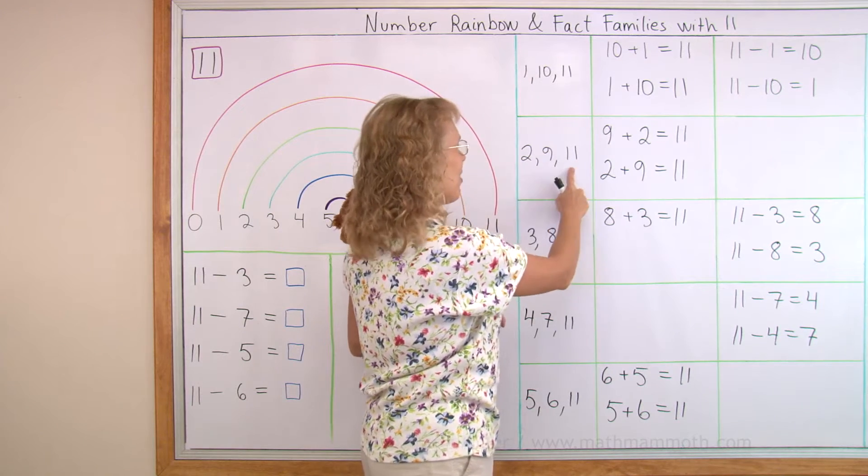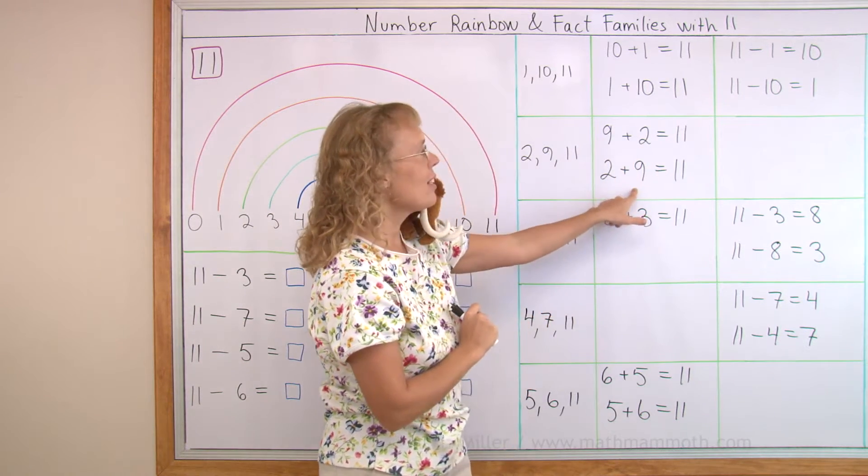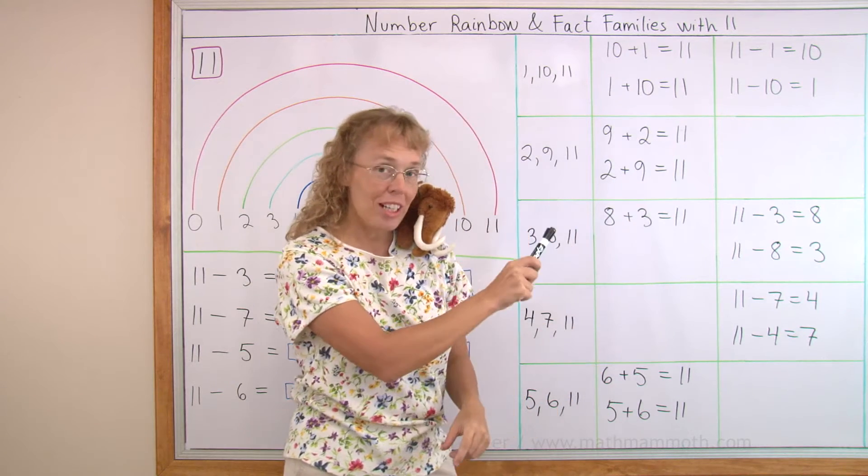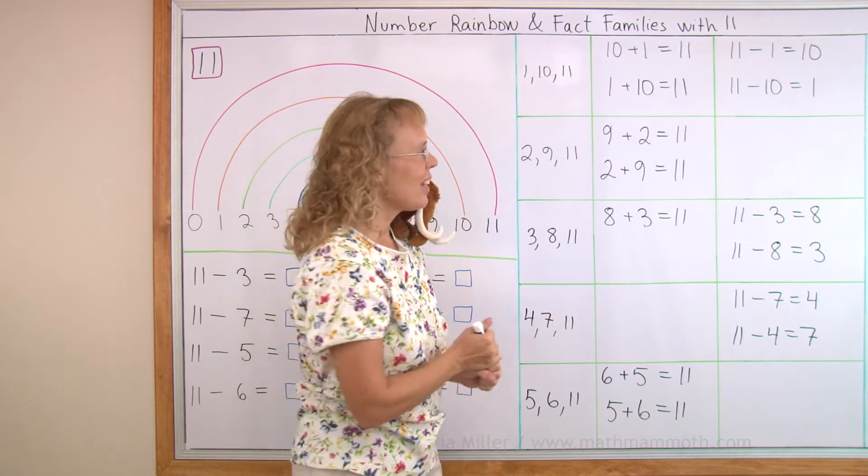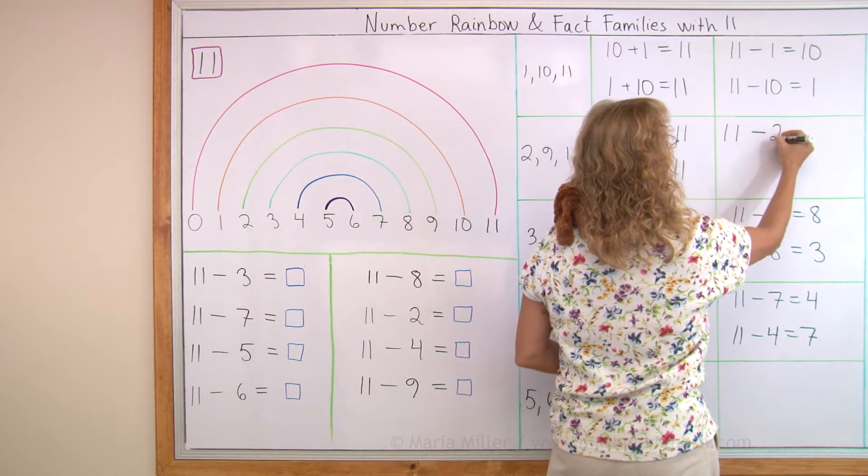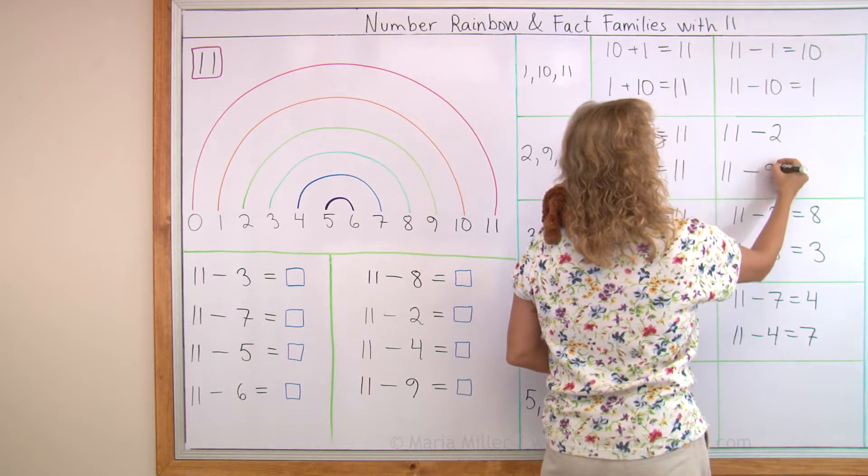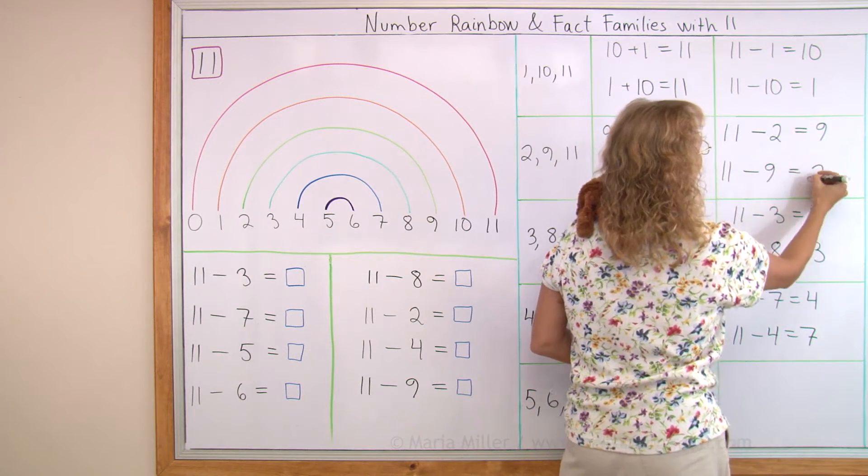2 and 9 make 11. So here I have used 9 plus 2 and 2 plus 9, they make 11. The two subtractions are missing. Can you tell me what those are? You start with 11, that's the total, and subtract either 2 or 9. And then the answer is here 9 and here 2.